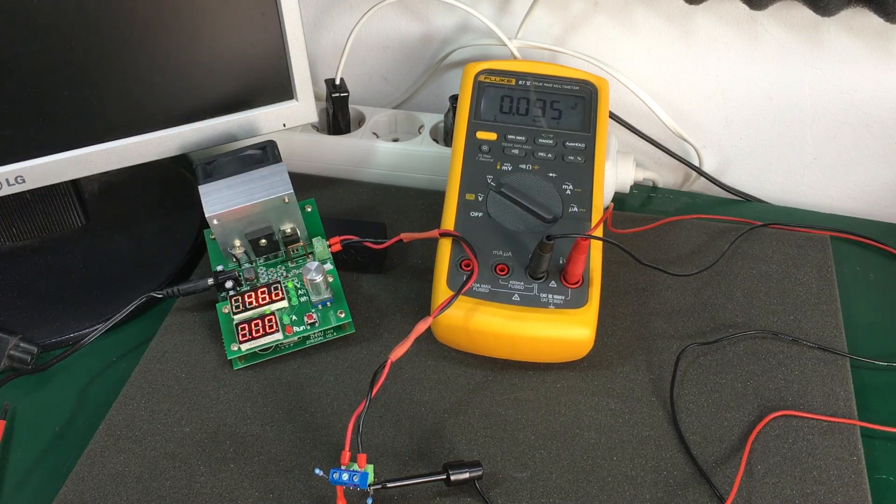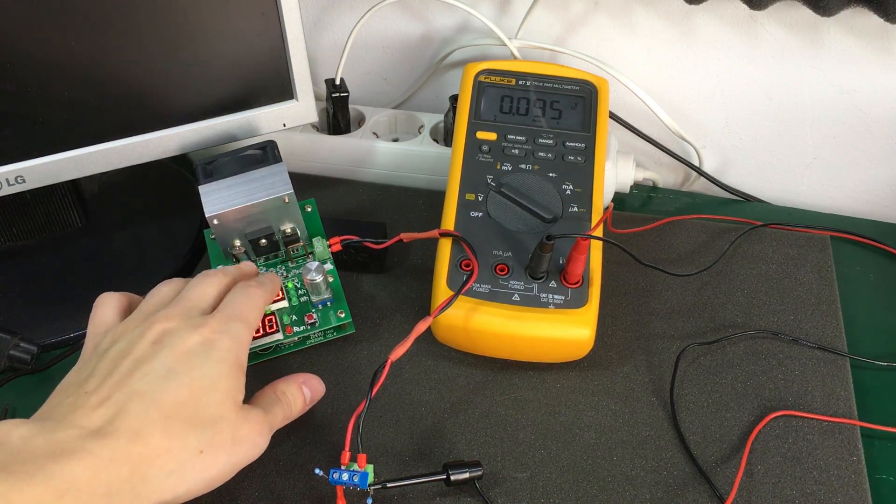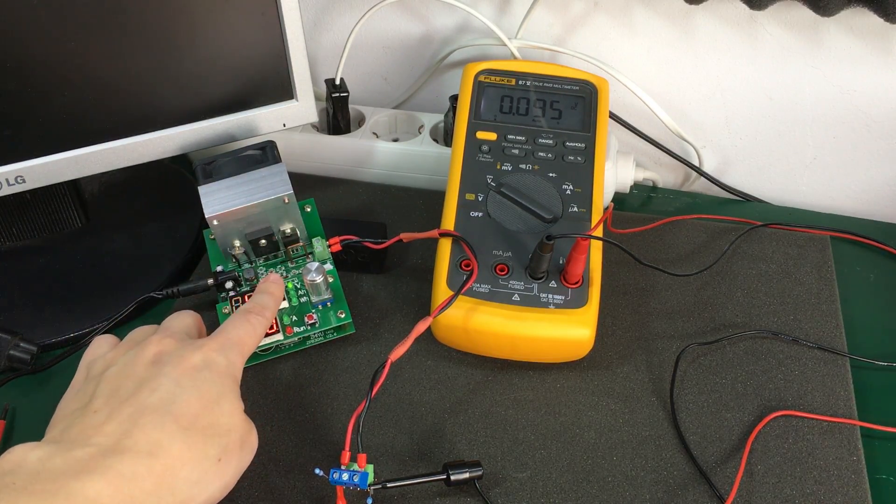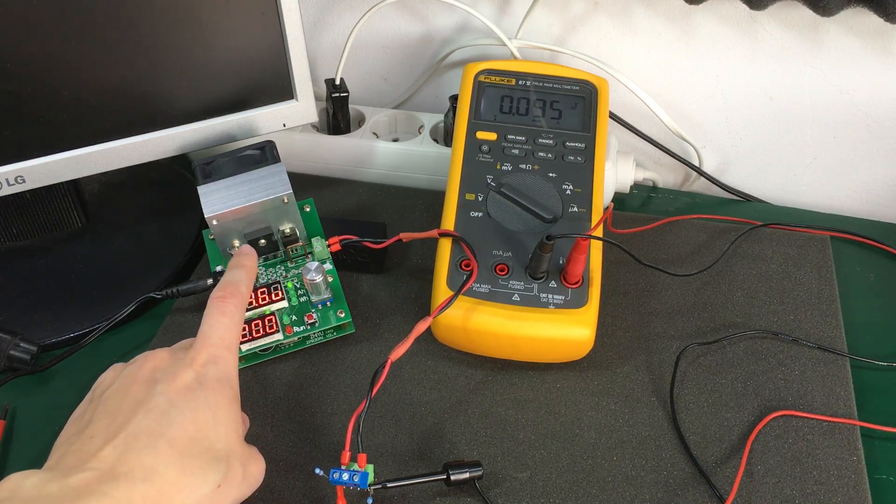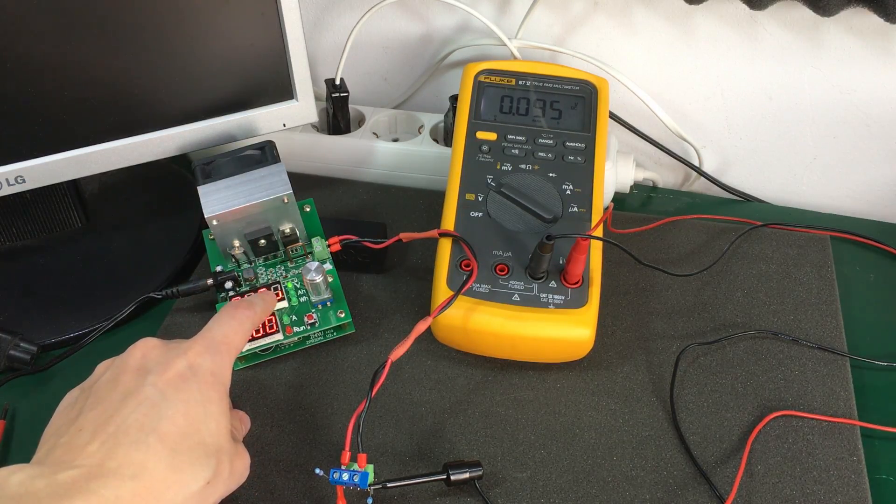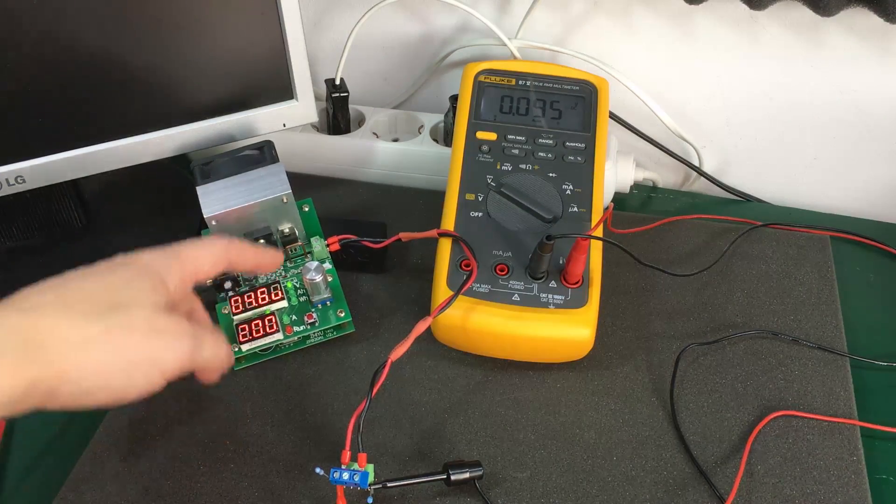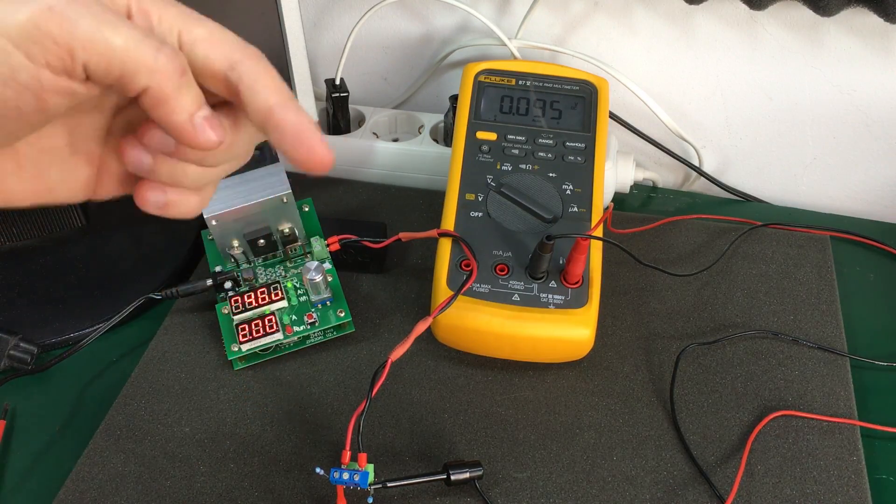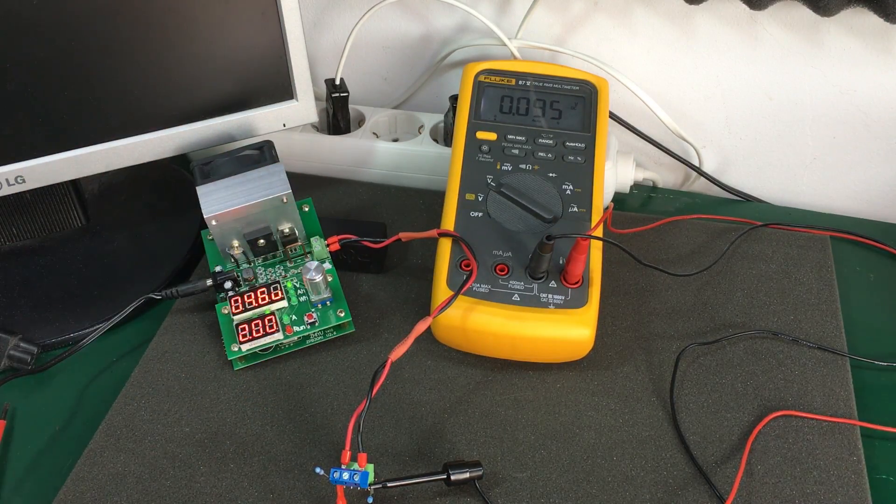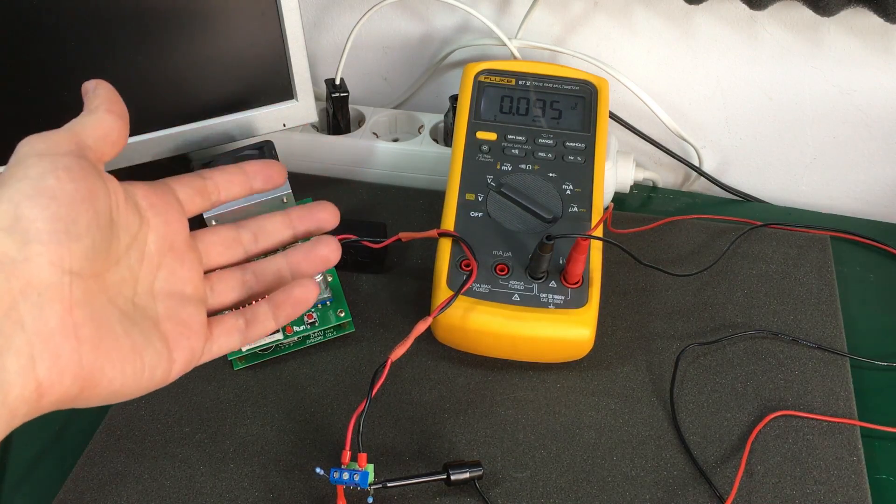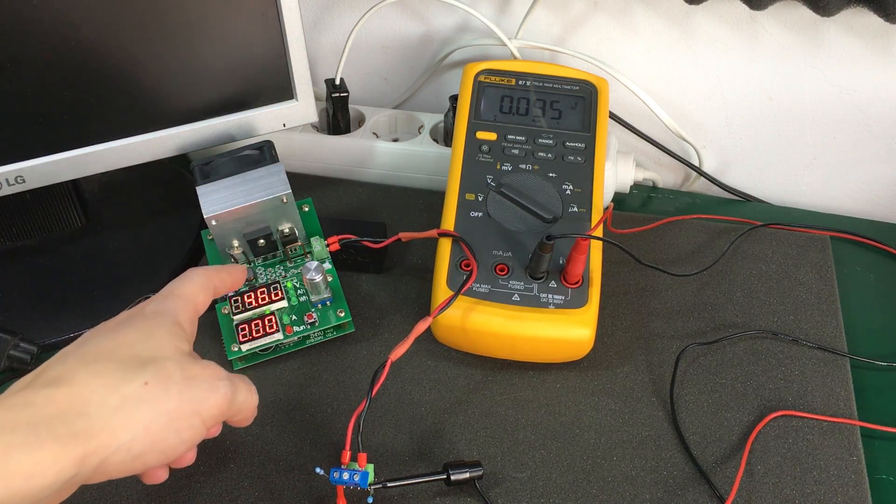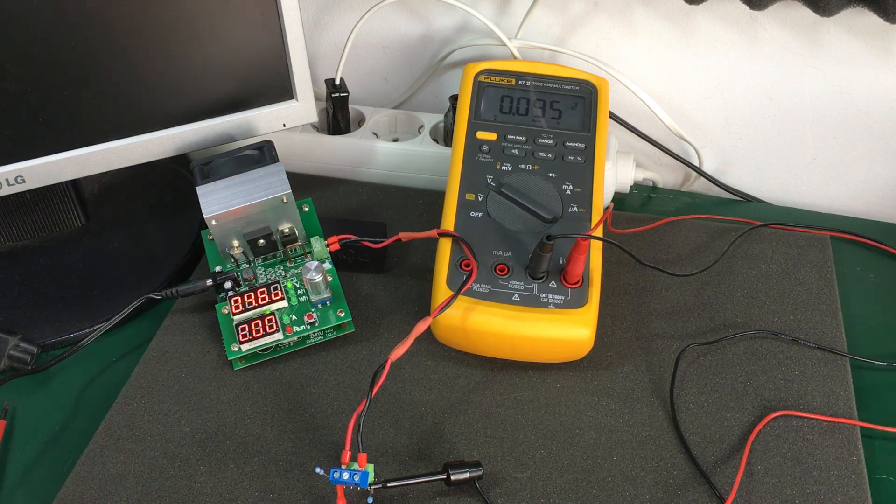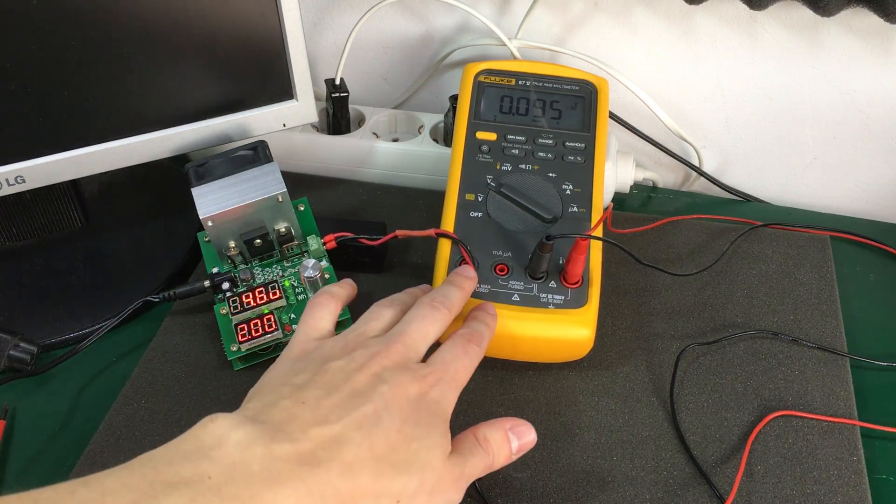For testing the output current, I'm using my 60W dummy load. If you haven't seen my videos on this dummy load, there will be a card showing on screen right now. Also there will be a link in the description to places where you can buy this dummy load. We'll start with the dummy load set for 2A and slowly increase the current while measuring the output voltage with this Fluke multimeter.